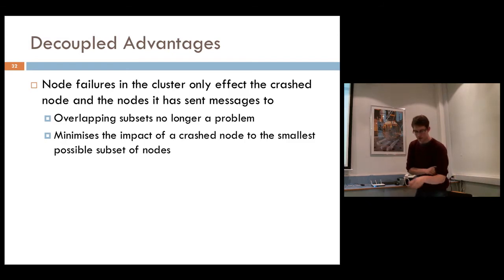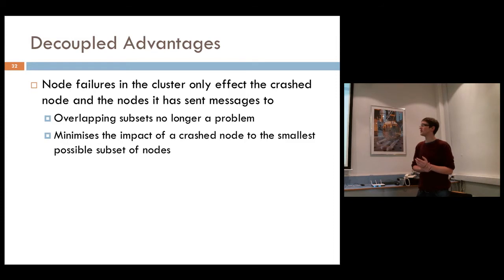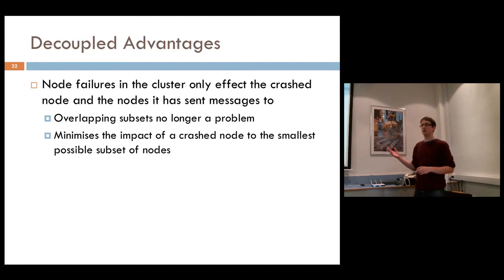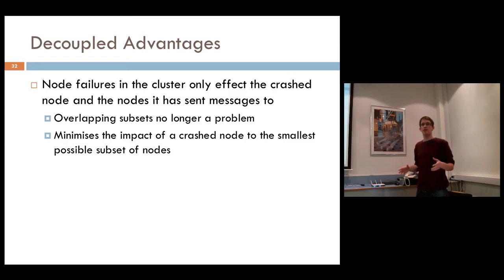Messages are delivered according to the global sequence number provided by the ordering box. Because each destination knows what message should have preceded the current one, it can wait for that message. Once the preceding message is received, it can deliver the current message. The advantage is it reduces the total number of messages required per total order — assuming the number of nodes in the box is less than the number of destinations to broadcast to.